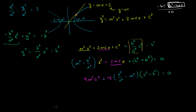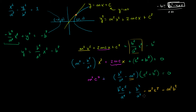We can divide everything by 4, simplifying to: m²c² − (b²/a² − m²)(c² + b²) = 0. Expanding: m²c² − b²c²/a² − b⁴/a² + m²c² + m²b² = 0. The m²c² terms cancel each other. Every remaining term is divisible by b², so dividing through by b² gives: c²/a² + b²/a² − m² = 0. Multiplying through by a² then gives: c² + b² − a²m² = 0.